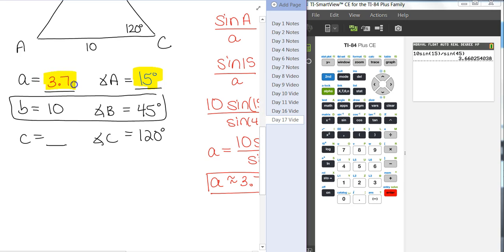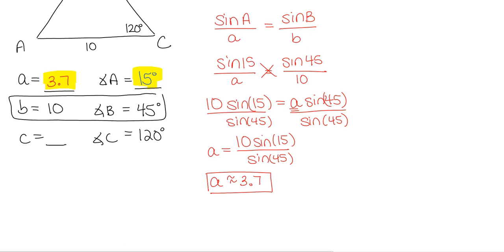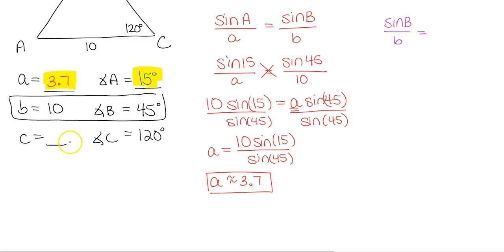Side a is 3.7. Now we solve for side c. Importantly, we're going to continue using the ratio for angle B over side b — the given values — rather than the value we just calculated for a. That way, if we had made a mistake in a, we won't magnify that error into c. Always use the given numbers when possible.